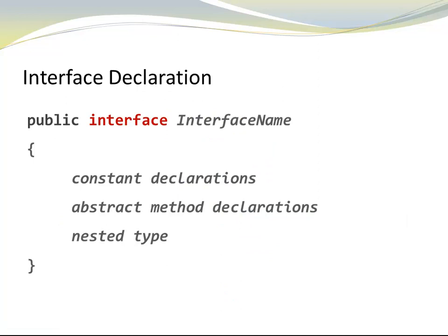This is how an interface declaration looks like in Java. We start with an access modifier, in our case public, a keyword interface, an interface name, curly braces, and in between we have three choices: constant declarations, abstract method declarations, or nested type declarations. Nested types are quite rare, so we're not going to discuss them any further.